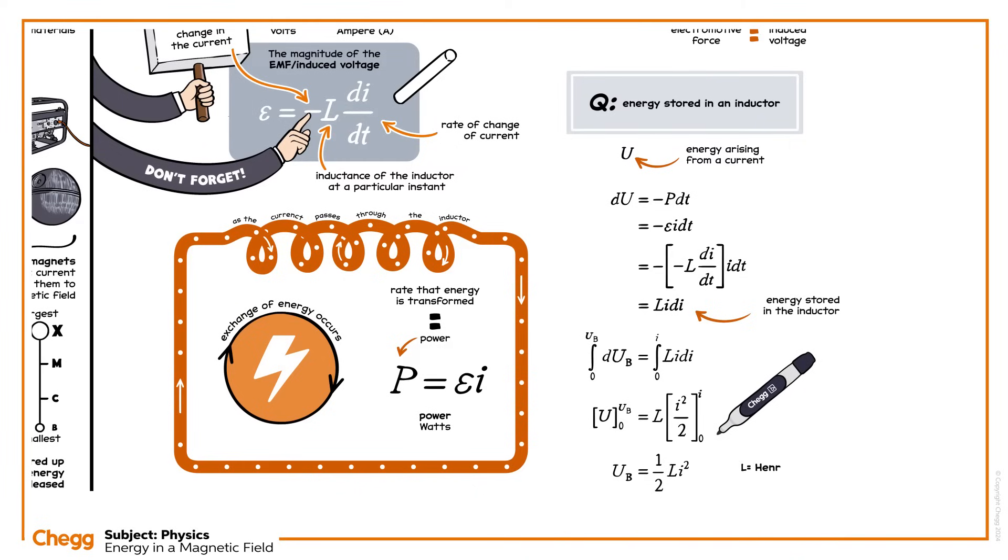L is measured in the units of Henry, and I is in ampere. With this equation, we can calculate the energy of any inductor's magnetic field.